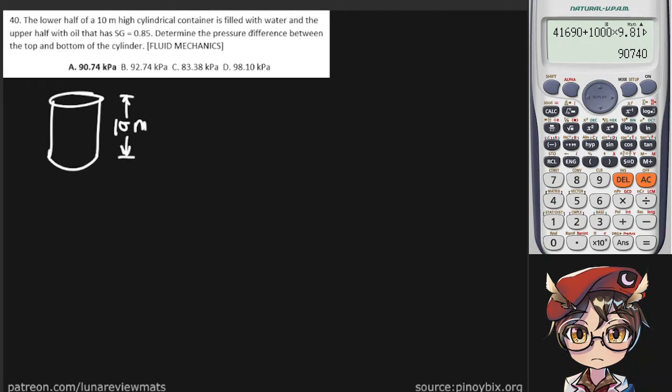The lower half is filled with water and the upper half with oil that has specific gravity of 0.85. So at the bottom here we have water and the top half is oil. Determine the pressure difference between the top and the bottom of the cylinder.